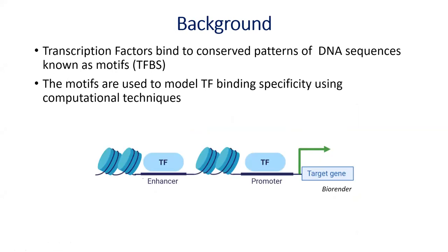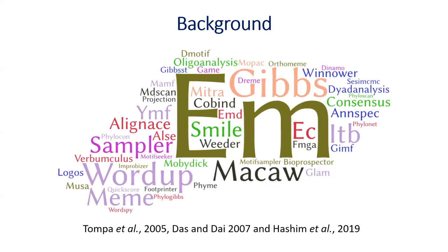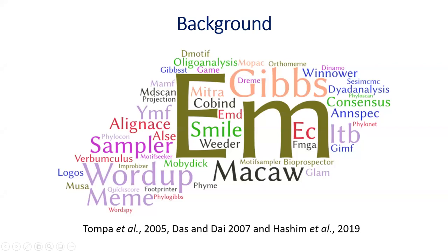These motifs actually bind to conserved patterns within DNA sequences. Once we find them, we can use them to model the binding energy of the transcription factor using different computational techniques and tools. The main problem is there are over 200 tools which have been used for motif discovery. These tools use different kinds of datasets and algorithms. There is a word cloud of just a few of the tools used for motif discovery, and some of them have been reviewed in the citations below.